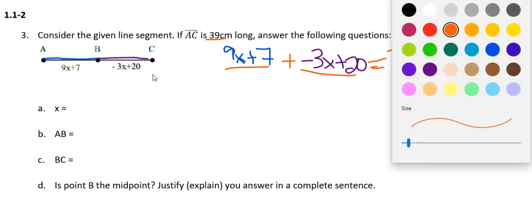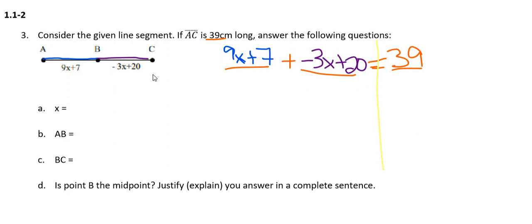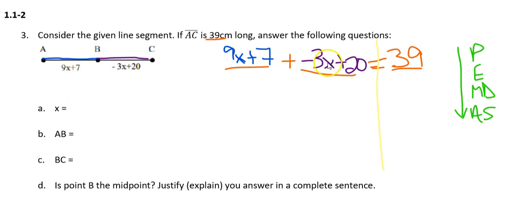To solve this equation, I have to remember what we discussed about simplifying and solving equations. When we simplify, we follow the order of operations on each side one at a time. On the left side, there are no parentheses or exponents. I do see multiplication — the 9 and x side by side means 9 times x — but I don't know what x is, so I can't do that. Same with negative 3 times x. But I do see addition and subtraction that can happen right now.